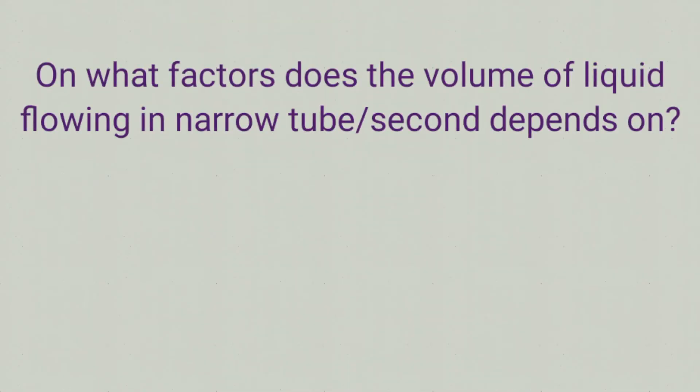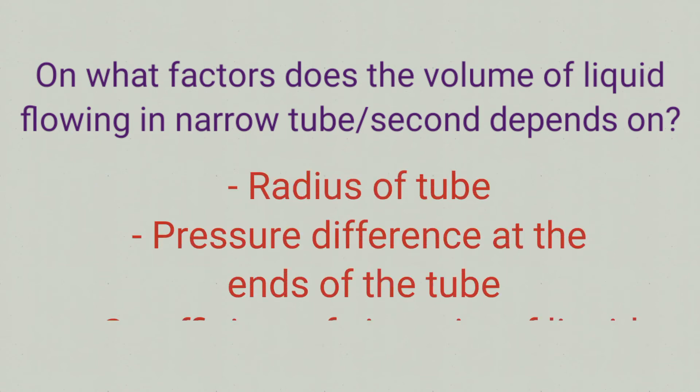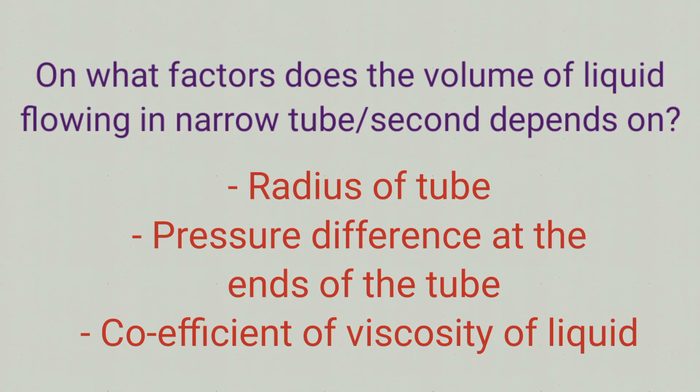On what factors does the volume of liquid flowing in narrow tube per second depend on? The answer is: radius of tube, pressure difference at the ends of the tube, and the coefficient of viscosity of the liquid.